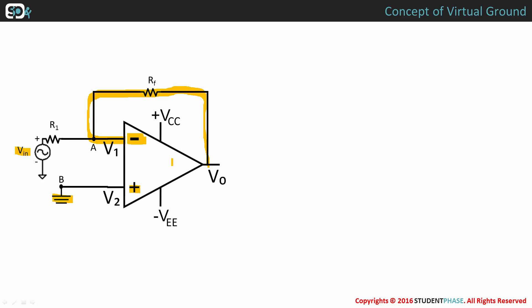What we are trying to prove with the concept of virtual ground is that potential at node A is equal to the potential at node B.